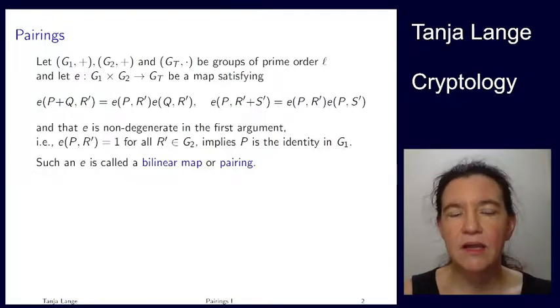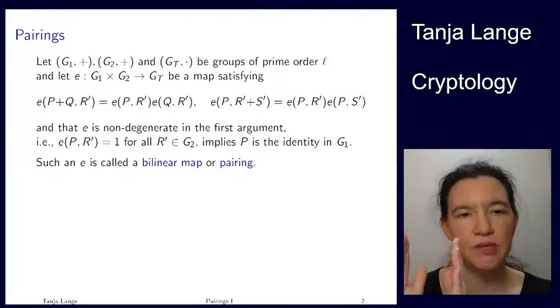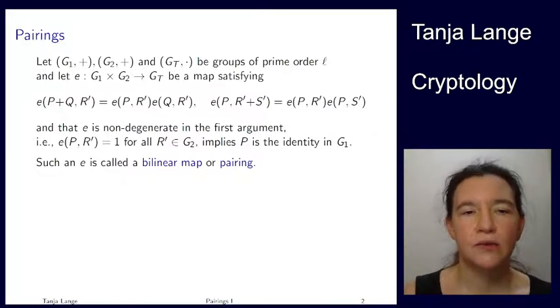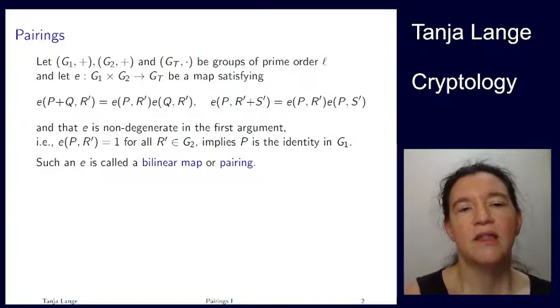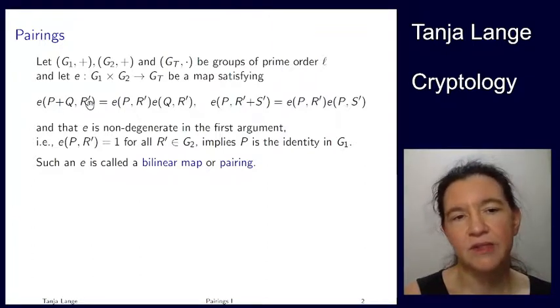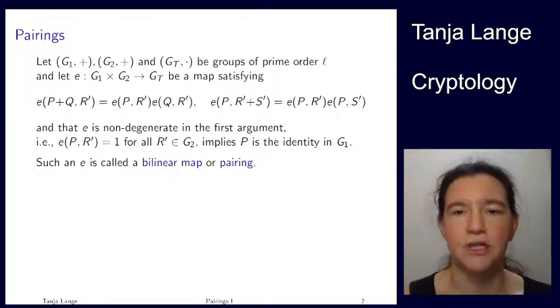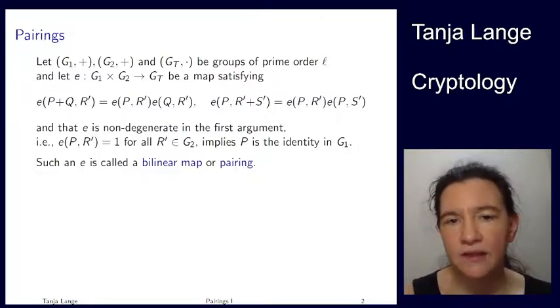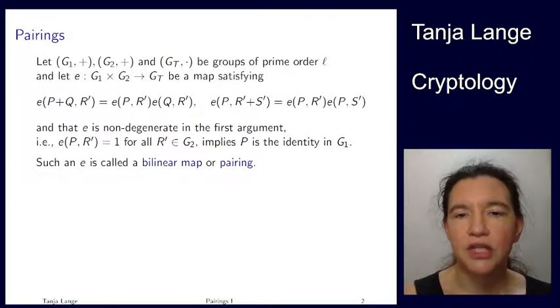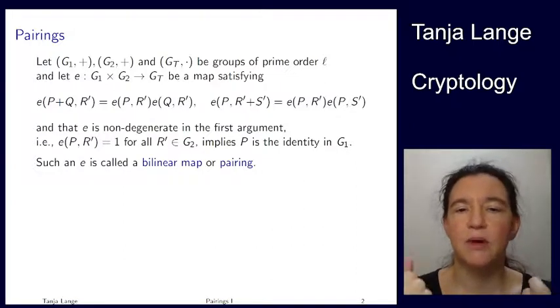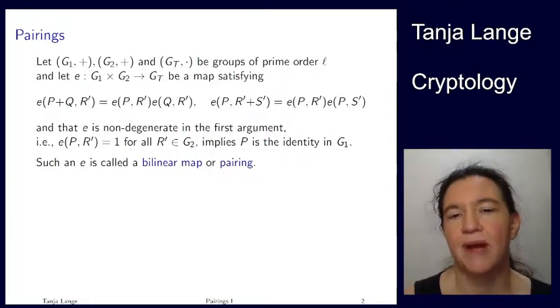Being bilinear means it's linear in both arguments. If we're taking the first argument, elements from G1, we're having a sum in G1 here, then taking the pairing of that with any element of G2 is the same as taking the pairing of P with R' and the pairing of Q with R', and taking the product, the group operation in GT. And then the same with G2, so it's also linear in G2. So it's linear in both, so bilinear, or it's pairing those two groups.